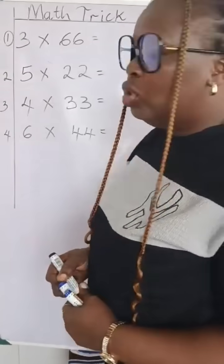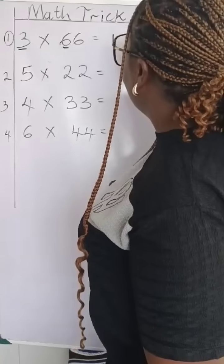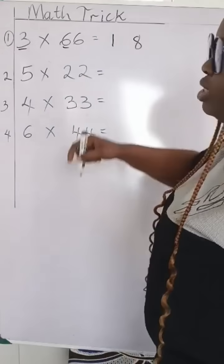3 times 66, we are going to have, first multiply these two. 3 times 6 is 18. You write your 1 and 8 and give a space in between.